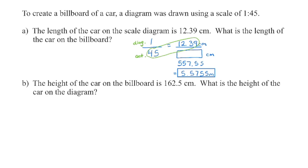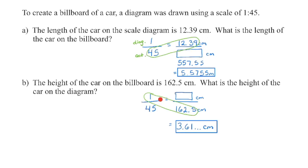I want you to pause the video and try the next one. So using our same scale, now you're given the height of the billboard is going to be this dimension. Could you determine the height of the car on the diagram that was used to make it? Using the same scale, because we're now looking for the diagram measure that's on top, I'm going to multiply and then divide by 45, and my diagram measure is going to be about 3.61 centimeters.